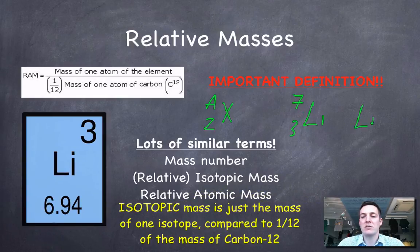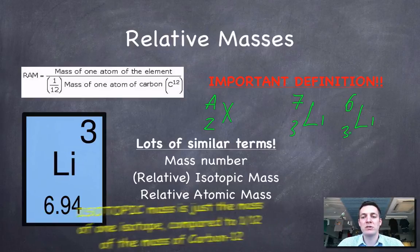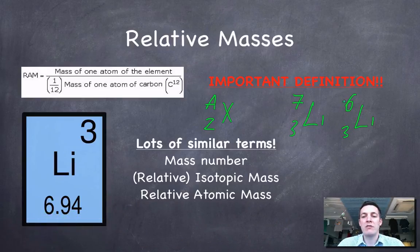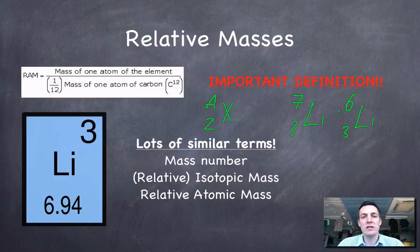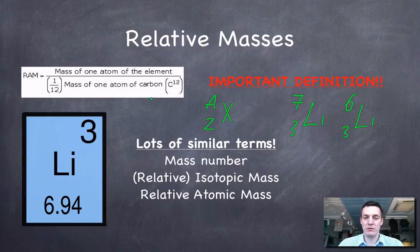There might be another isotope of lithium, say lithium-6. It's got to have three protons. The relative atomic mass would average the masses of all these different isotopes and then give it relative to the mass of one twelfth of carbon-12.